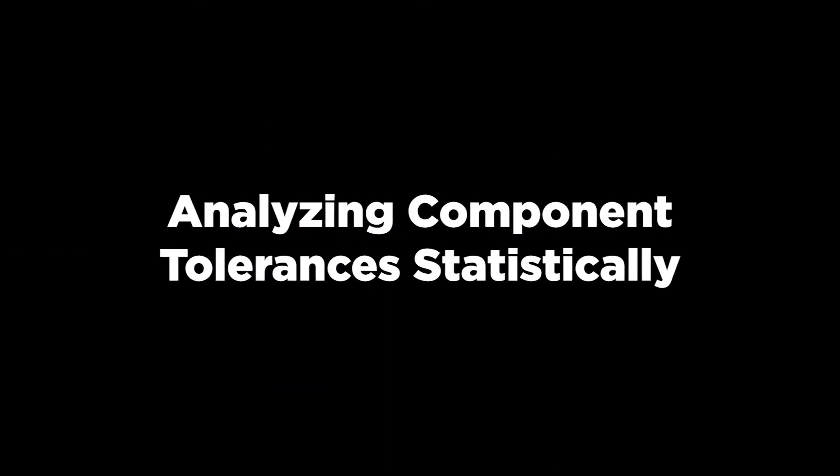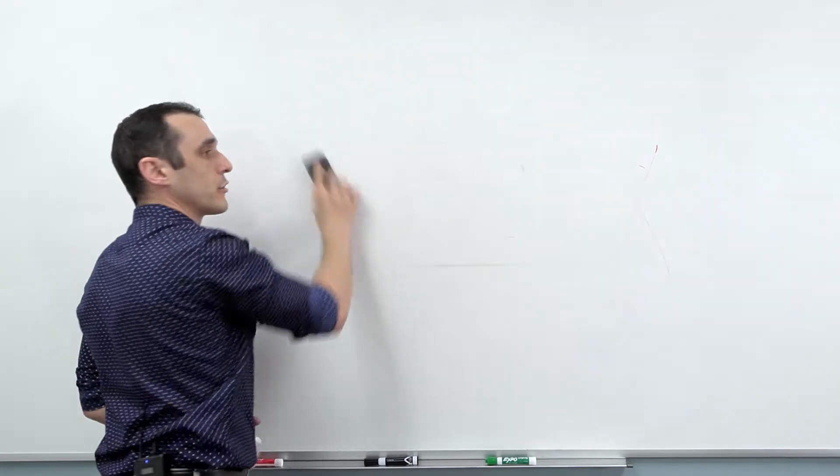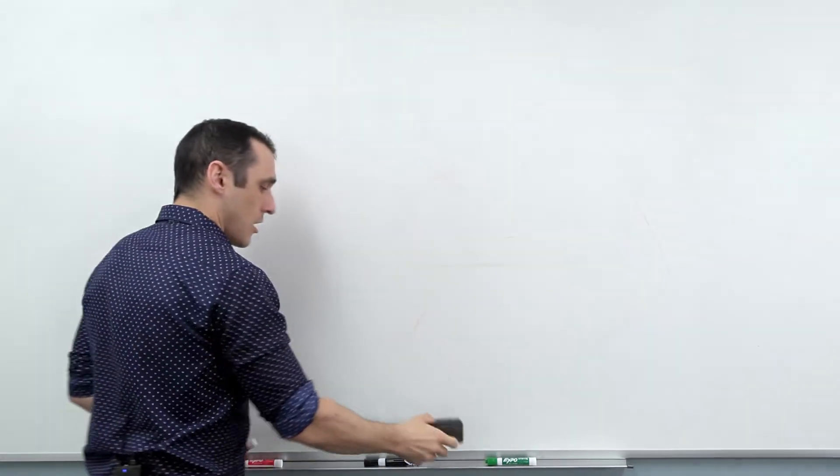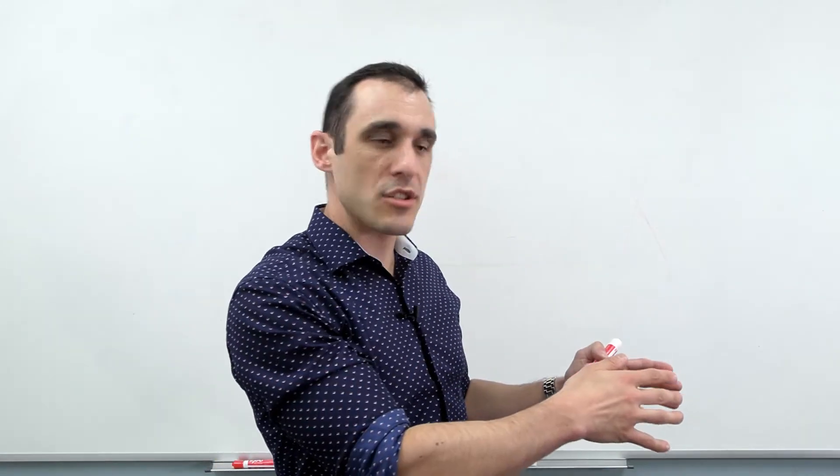But some simulation programs don't allow you to just enter in say the 5% or the 10% value or whatever it is for your components directly into the simulation program. You have to actually calculate something else first. So let's take a look at that. Now what we want to do is just look at how we need to analyze a tolerance statistically.